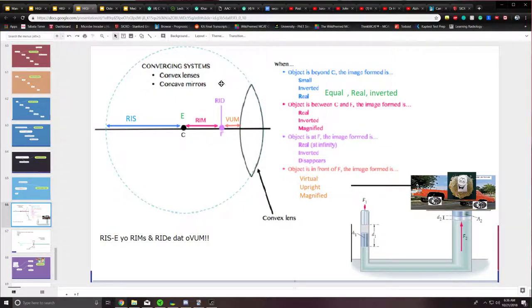And again, if the object is placed on the focal point, then it's going to be real, at infinity, inverted, and we cannot see it, or it disappears.